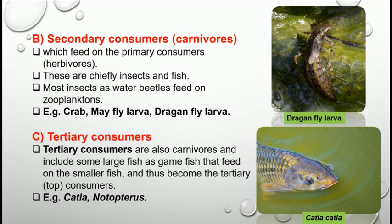Then the tertiary consumers. The tertiary consumers are also carnivores and include some large fishes, such as game fish, that feed on the smaller fish and thus become top consumers. Other examples of tertiary consumers are Catla catla and Notopterus.